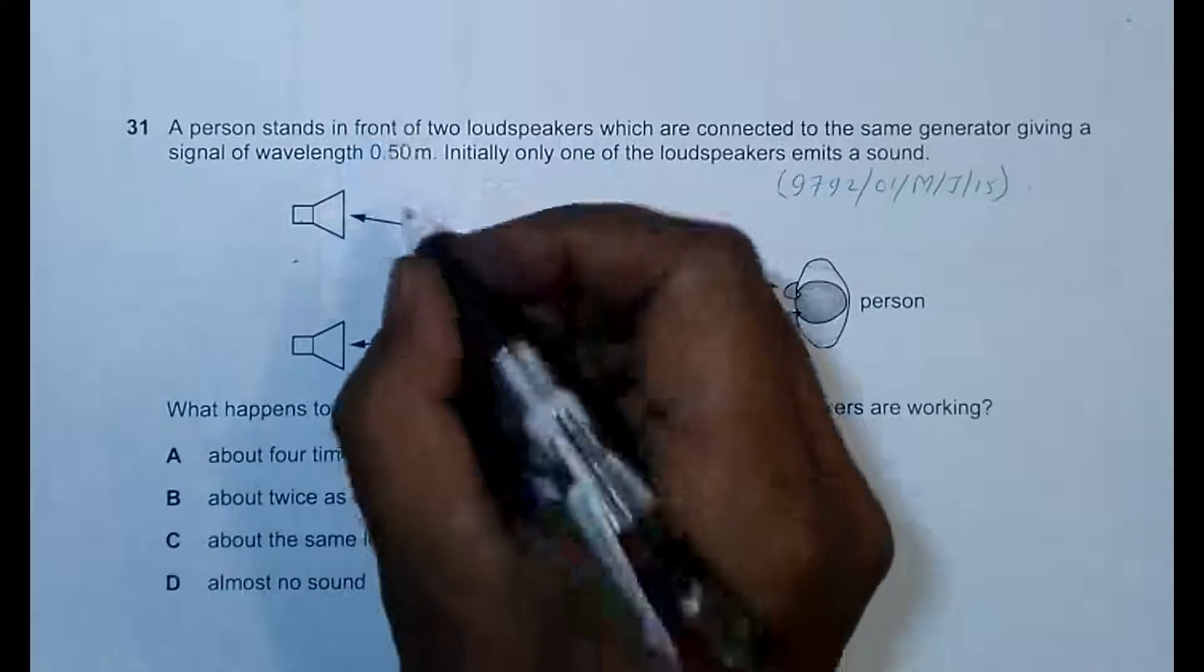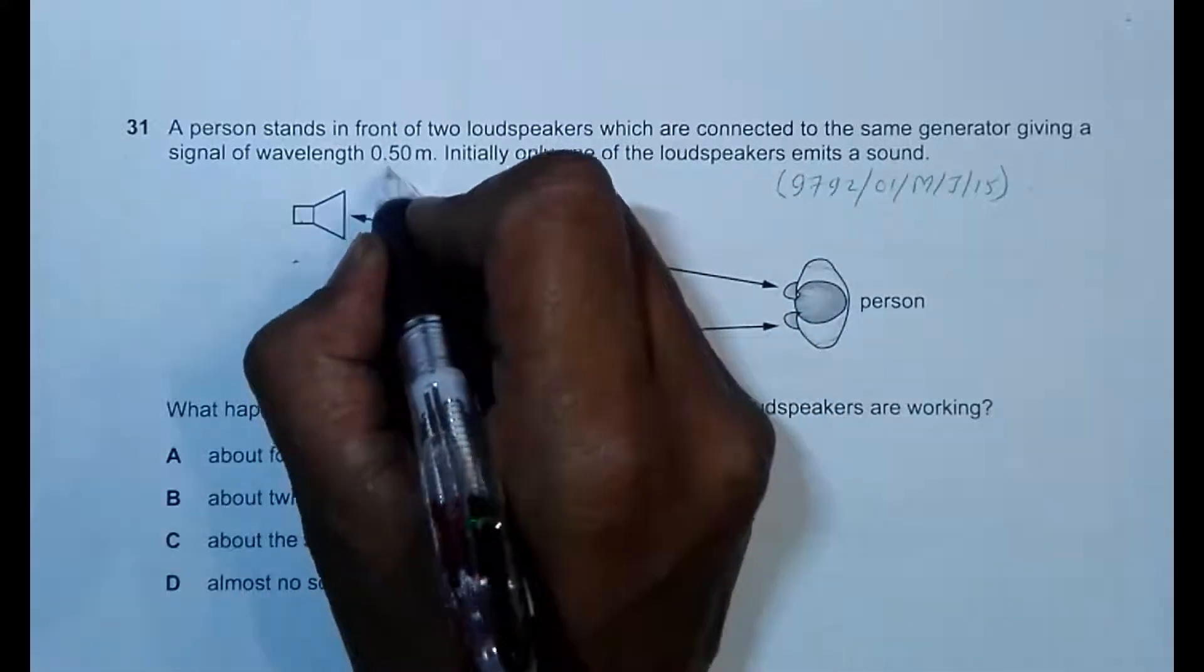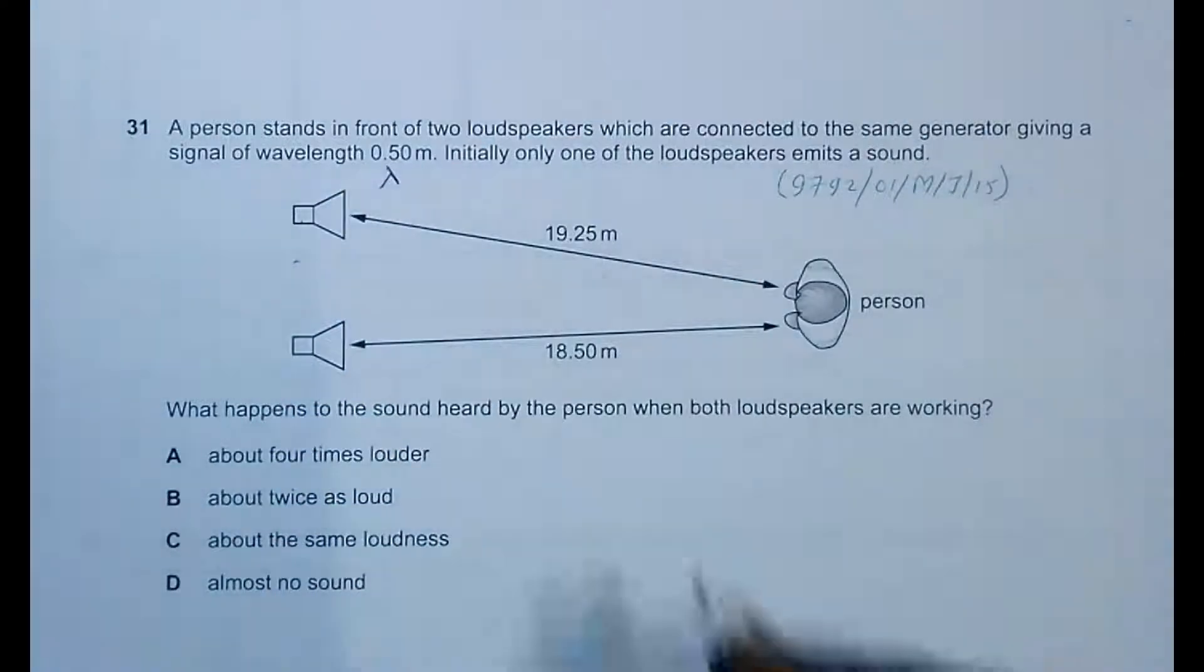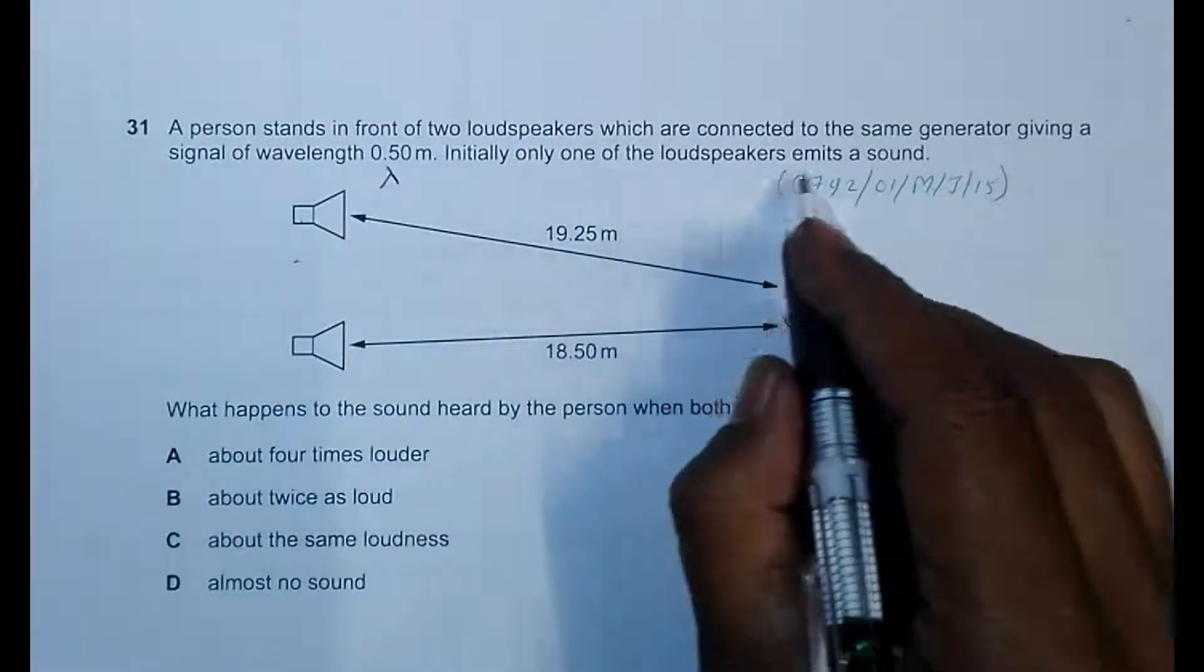Giving a signal of wavelength 0.50 meters. So lambda is equal to 0.50 meters. Initially only one of the loudspeakers emits sound.